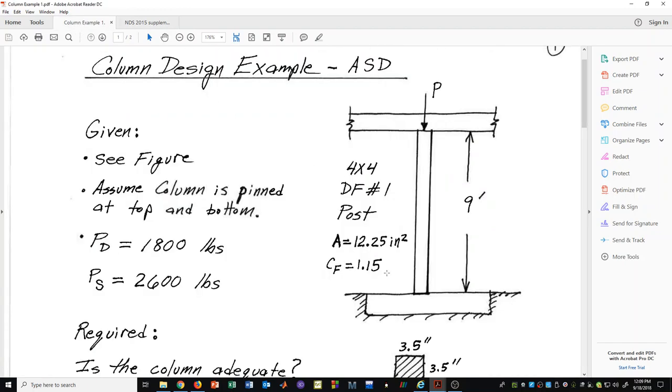Using that value we will be able to calculate our allowable compressive stresses. We are assuming that the column is pinned at the top and the bottom, and in wood design that's often the case for columns, even when they're nailed. We just assume pinned at the top, pinned at the bottom. We have a foundation possibly at the bottom here.